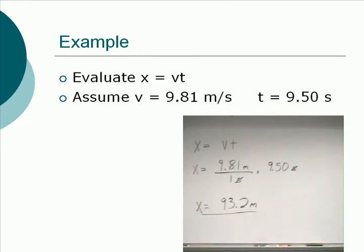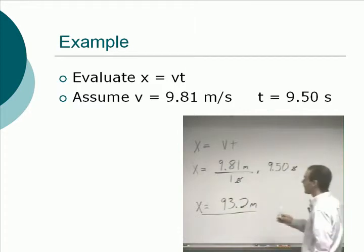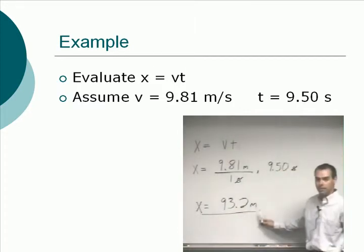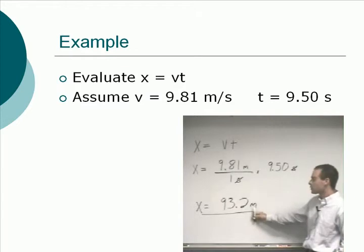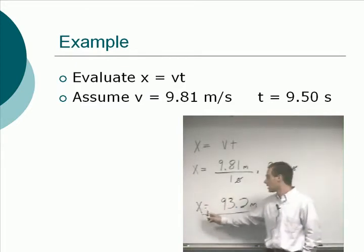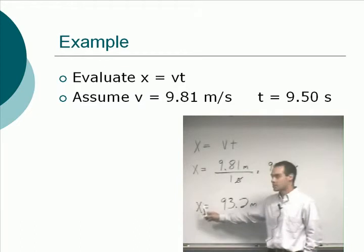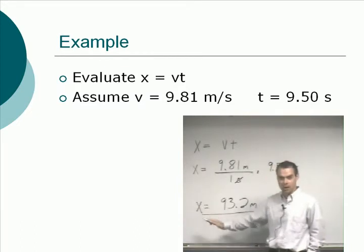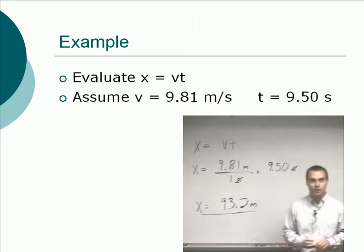Now that would mean, as far as the dimensional correctness of this, that would mean that the value of x had better be a length. Because when we canceled off the units, we were left with units of length, which means x better be a length. Now if x was supposed to be a voltage, or a velocity, or a force, something's wrong. But it turned out to be a length. Everybody's happy.